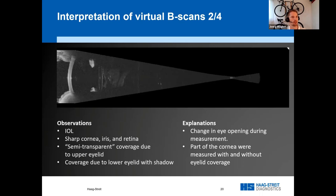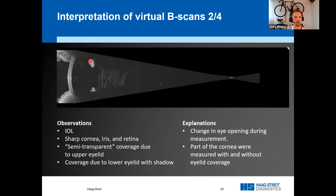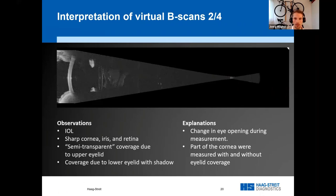Now let's look at the second example. First of all, we observe that the natural lens was replaced by an IOL. We can see a sharp cornea, iris, and retina. However, we can also see some semi-transparent coverage due to the upper eyelid, and the coverage due to the lower eyelid shows some kind of shadow effect. Here you see the part where the coverage seems semi-transparent, and here you see the shadow effect.